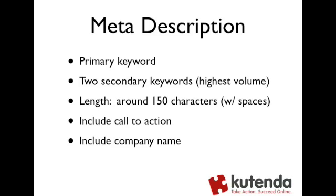You're probably going to want to shoot for those highest volume keywords. Lengthwise, about 150 characters including spaces — that's what shows up in the search results, so that's the guideline to shoot for. You also want to include a call to action, because that's going to drive someone to click on your search result and come check out your website. If you have special deals, free shipping, a sale, or a discount for new customers, you might want to include that in your meta description tag. And finally, include your company name — another good way to make sure you're showing up for your company name in the search results.